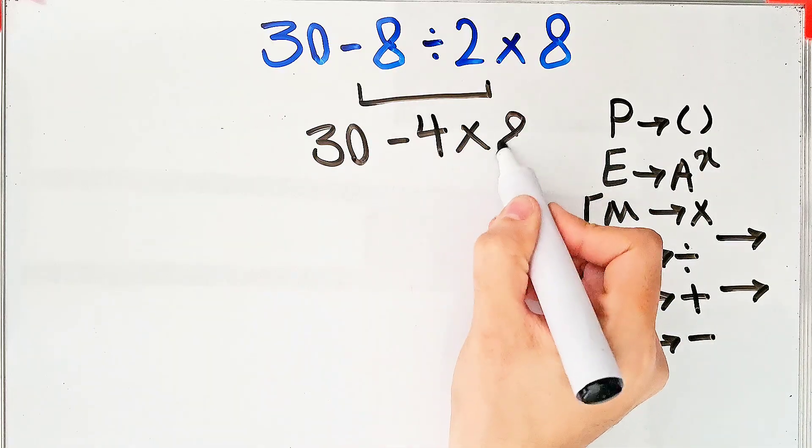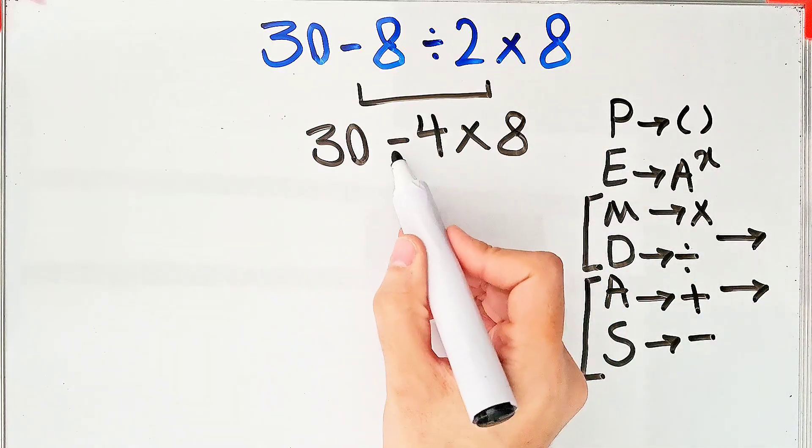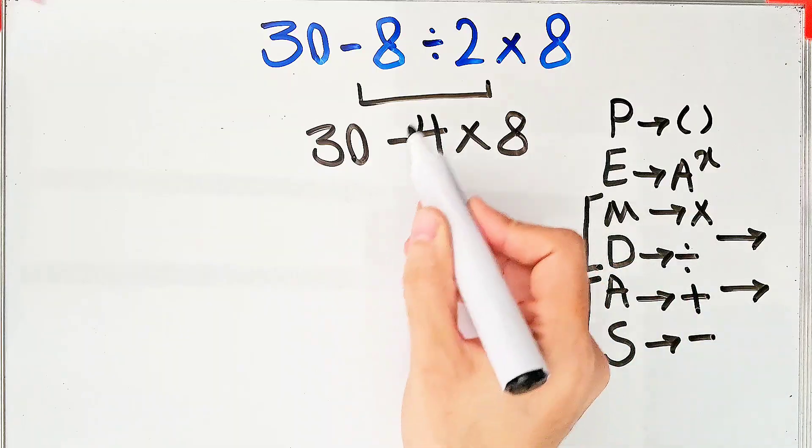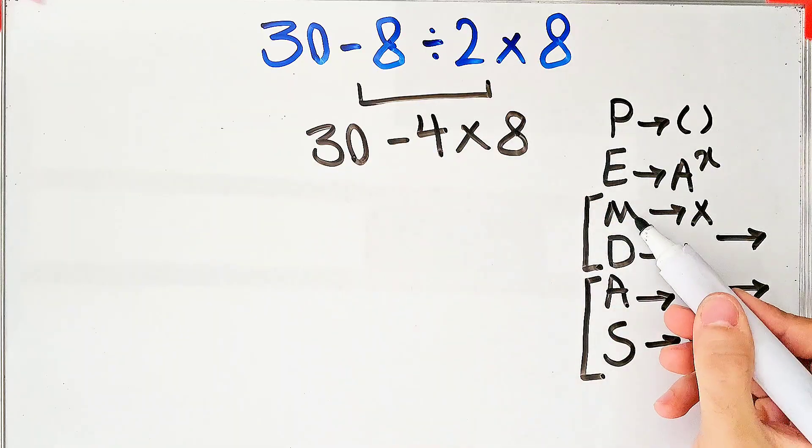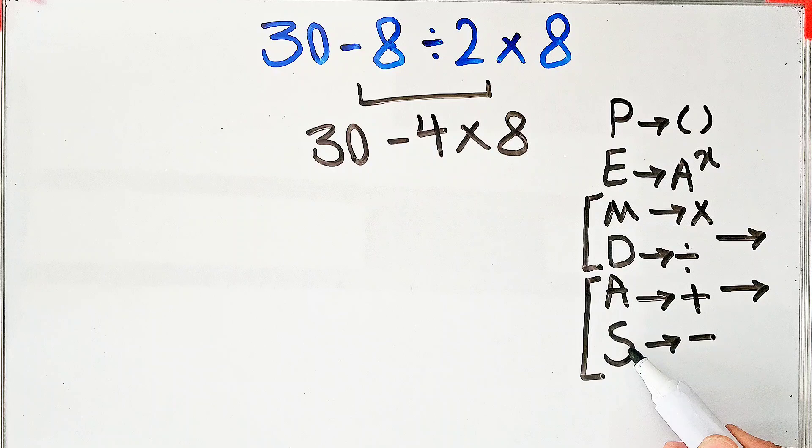Because the multiplication has higher priority than subtraction, we work from left to right with division and multiplication. 8 divided by 2 equals 4, then 4 times 8.